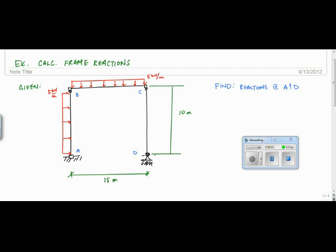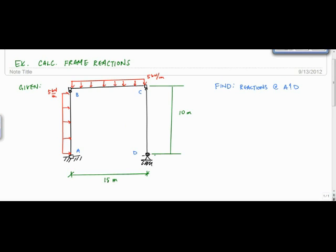I'm going to do this example problem on calculating frame reactions. We have a frame with points A, B, C, D. It's fixed at A, a pin or hinge at B, another hinge at point C, and member BC rests on top. There's a pin at D. The height is 10 meters, the horizontal distance is 15 meters, with a 5 kilonewton per meter uniform distributed load. We want to find the reactions at A and D.